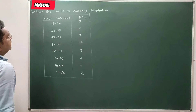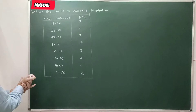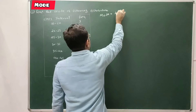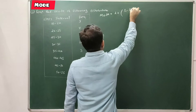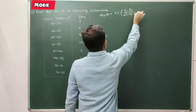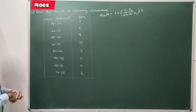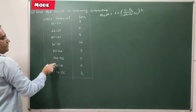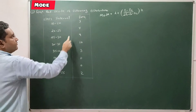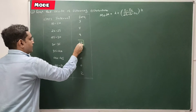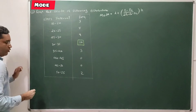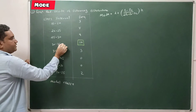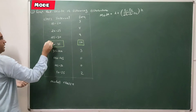Now question number 2: we have to find the mode of the following frequency distribution where class intervals and frequencies are given. The formula is: mode = L + (F1 minus F0) upon (2F1 minus F0 minus F2) into H. We start by finding the highest frequency, which is 10, so our modal class is 30 to 35.